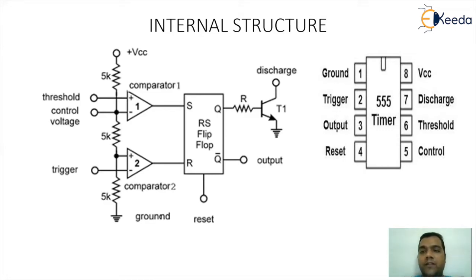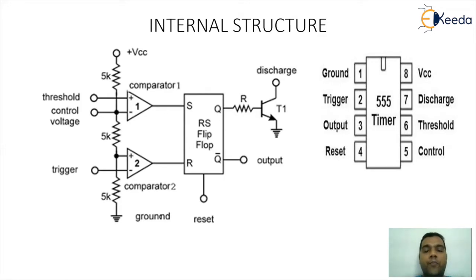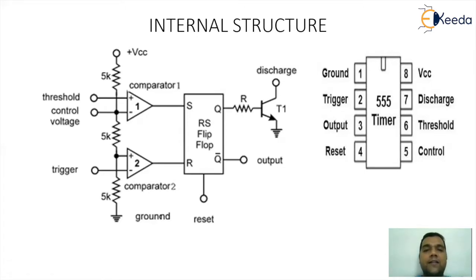Overall we have 8 pins for this Timer IC555. In the internal structure, you can observe clearly there is an SR flip-flop placed at the center with input pins S and R, and output pins Q and Q-bar, where the Q-bar pin of the flip-flop will actually work like an output pin for the IC timer. The Q pin is connected to a transistor via a resistor, which will work under a concept of closed switch and open switch — implying the transistor is going to work like a switch, operating in the saturation region or the cutoff region.